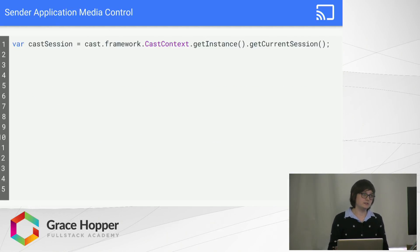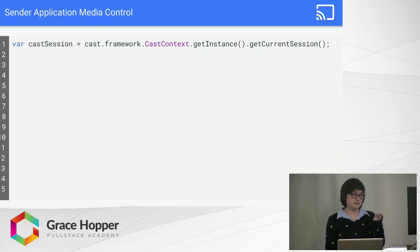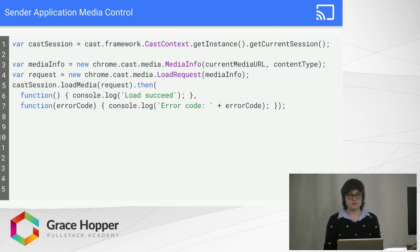Now the sender application. Once they've communicated with one another and are talking back and forth, you get this cast context object. From that you get an instance of it and then get the current session — the current connection you have — and save that. The cast context is what will trigger the events and the cast state. Once you have your session, you need to tell it what media you want to stream. So you create a media info object with the URL of the media you want to stream and what type of media it is, whether it's a video or music. Then with that you create a new load request, and that load request is fed into the load media method on the cast session, which returns a promise. So if it fails, you can send out an error code.